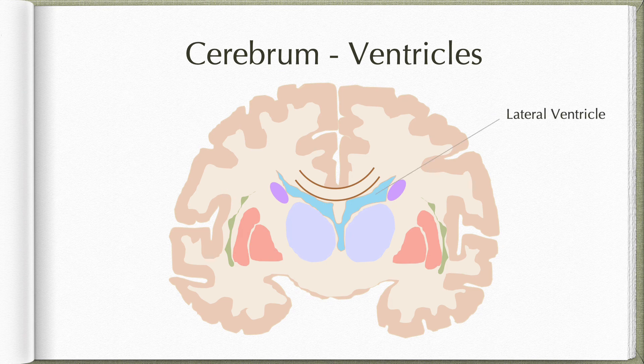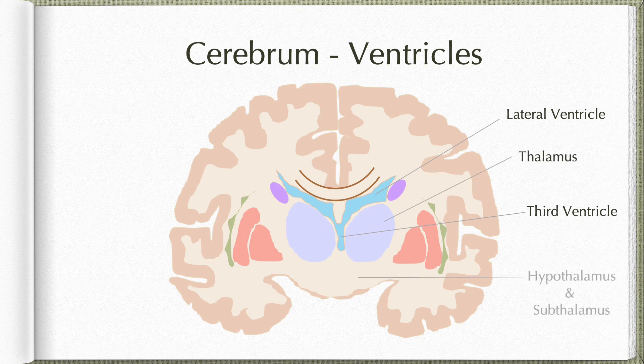Each cerebral hemisphere has a C-shaped lateral ventricle, and the two lateral ventricles communicate with the third ventricle. The third ventricle is the cavity of the diencephalon, flanked on either side by the thalamus, and below the thalamus we have the hypothalamus and subthalamus.